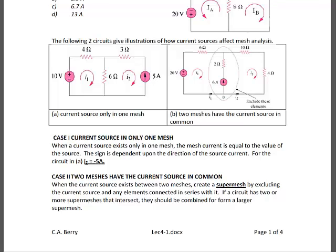The second type of current source is when the current source is shared between meshes. When the current source is shared between meshes, it's called a super mesh. The current source and anything in series with it becomes part of that super mesh.